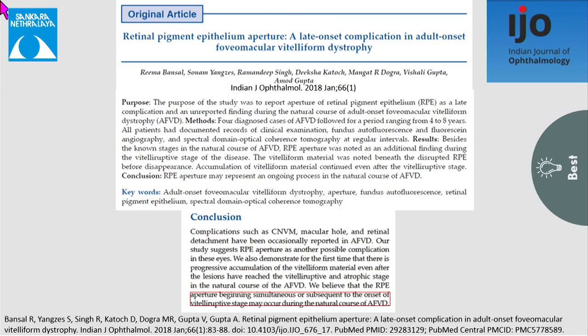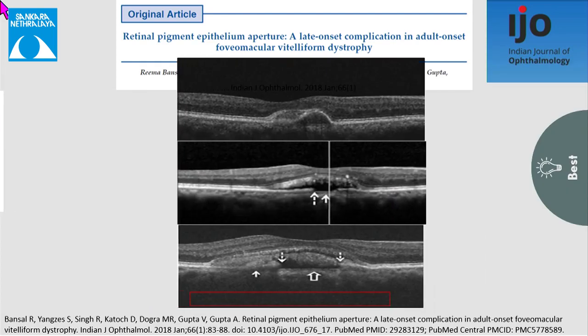Recently, a late-onset complication known as RPE aperture on OCT was reported in the vitelliform stages, which represents an ongoing process in the natural course of the disease. It differs from RPE rip in that there is no retraction seen at the edges. The mechanism and nature of this finding is yet to be studied.